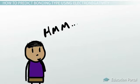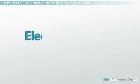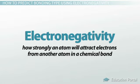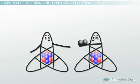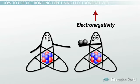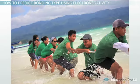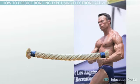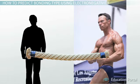You can predict which type of bond will form between atoms by looking at the electronegativity of each atom involved. Electronegativity is how strongly an atom will attract electrons from another atom in a chemical bond. Some atoms have a higher electronegativity while others have a lower electronegativity. Electronegativity is like a tug-of-war game — if one person on the rope is stronger than the other, that stronger person will tug harder, pulling the other person in their direction.